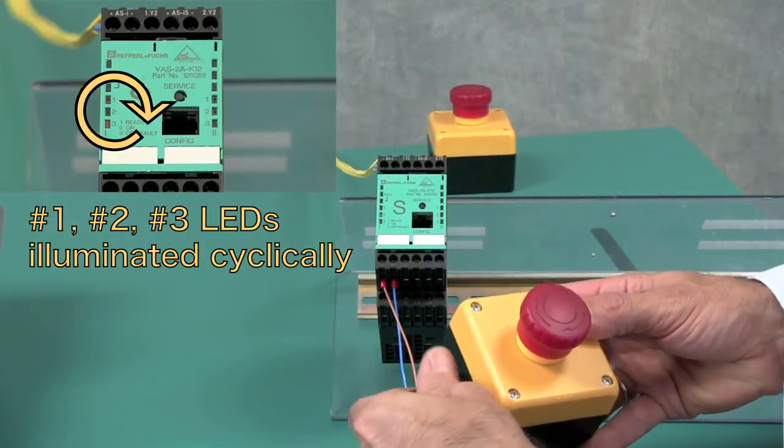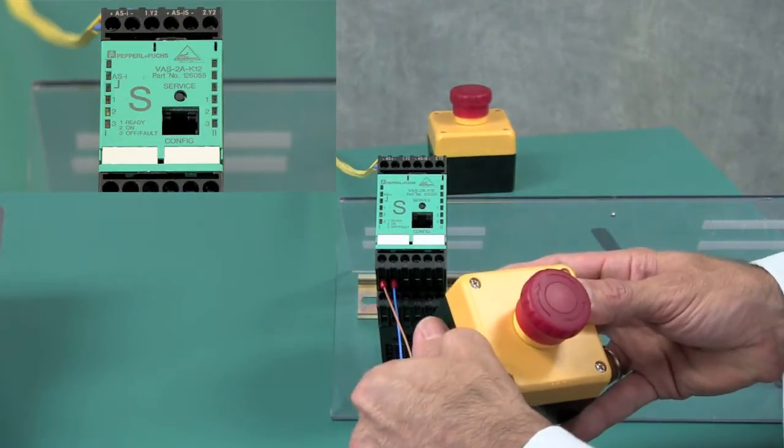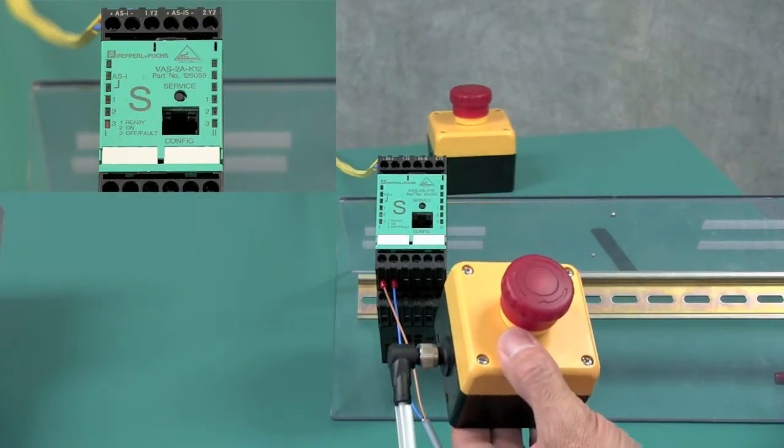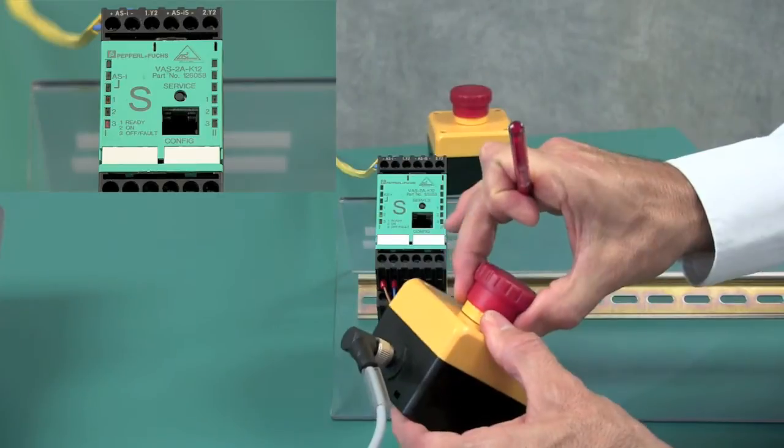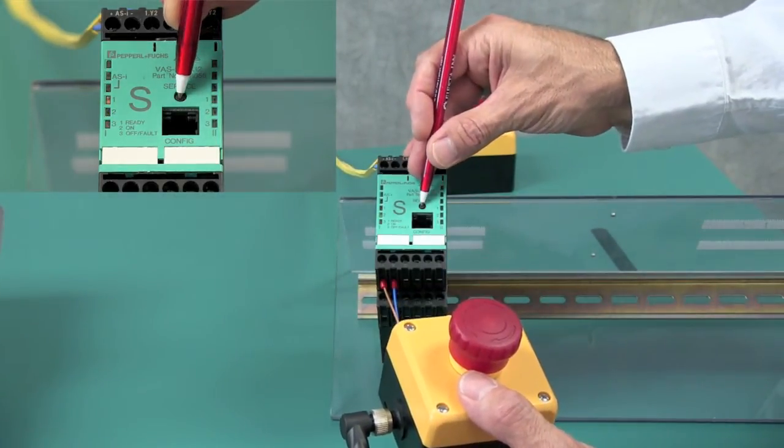Next, reconnect the new e-stop. The proper address will be assigned automatically by the gateway. Make sure it's in the release state and again, press the service button lightly.